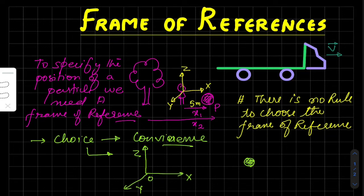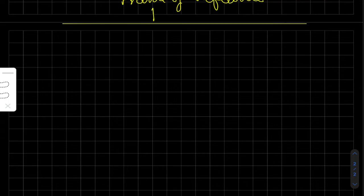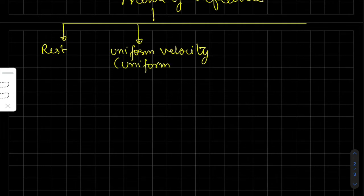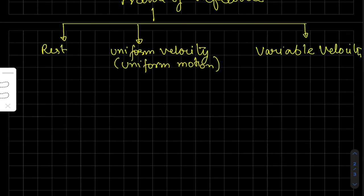So there are two types of frame of references — let's discuss those. We can subdivide them: one is at rest, second is if the frame of reference is moving with uniform velocity — that is, uniform motion where velocity is constant. And the third one is when velocity is changing, or variable velocity, which is also called an accelerating situation.